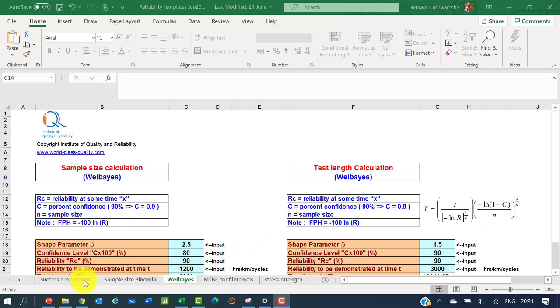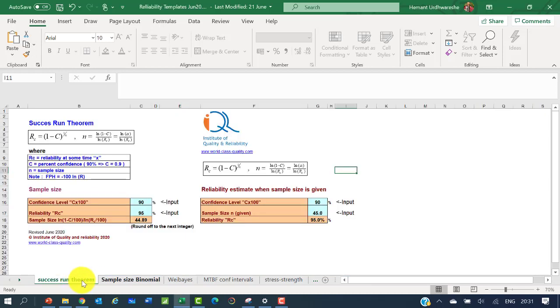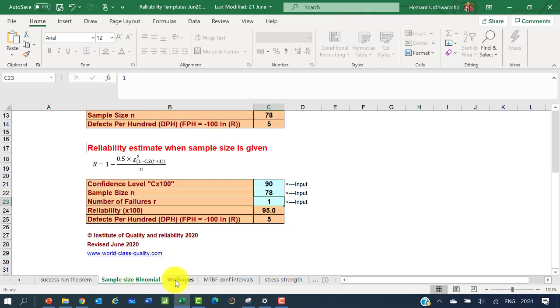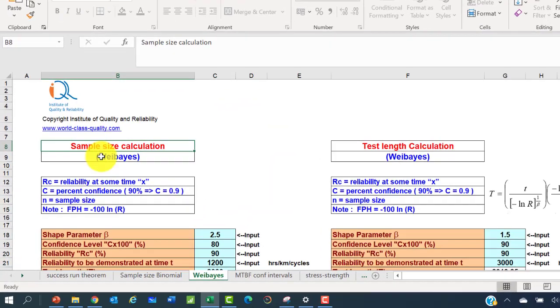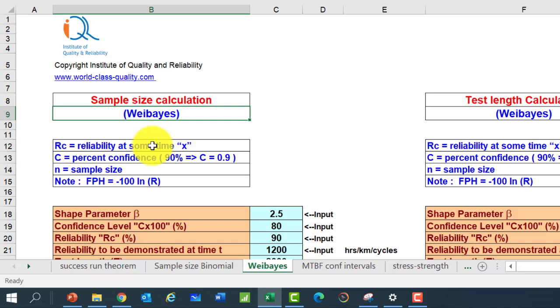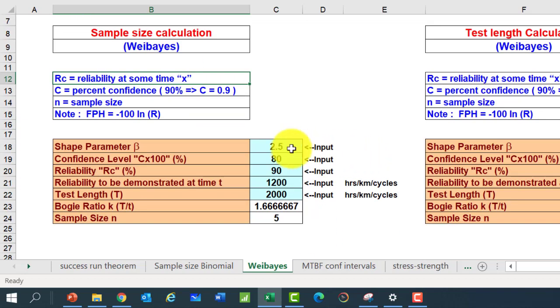In the downloaded template, you can see many worksheets. Choose the worksheet waybase. We have seen the success run theorem in the previous video. Now choose the sample size calculation. You can input the data as given in the problem: beta shape parameter 2.5, confidence level 90%, reliability 99%, reliability to be demonstrated at time 1500, test length of 7500. Then you will see the sample size of 5.